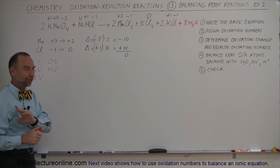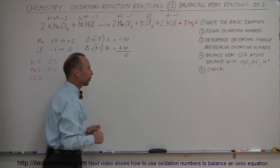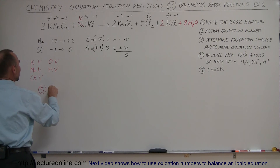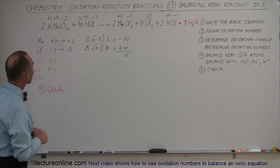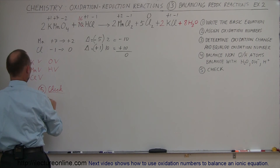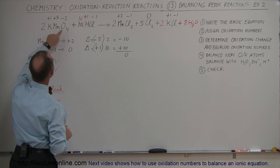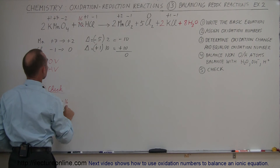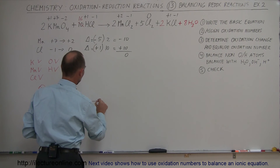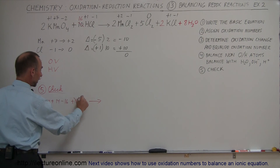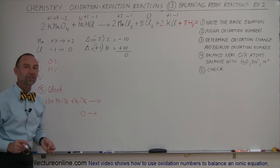Just to make sure we didn't upset anything by changing coefficients or adding water molecules, we now check that everything is still balanced by adding up all the oxidation numbers on both sides. On the left side: potassium is 2 times plus 1 equals plus 2; manganese is 2 times plus 7 equals plus 14; oxygen is 2 times 4 times minus 2 equals minus 16; hydrogen is 16 times plus 1 equals plus 16; chlorine is 16 times minus 1 equals minus 16. We have plus 16 and minus 16 canceling out, and plus 2 plus 14 minus 16 also canceling out — giving a total of 0 on the left side.